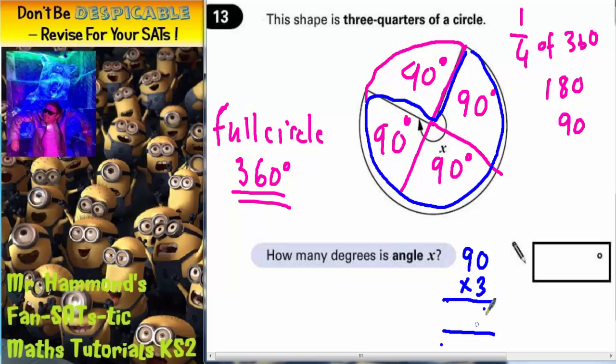3 zeros are 0 and 3 nines are 27. Put your 7 in, carry your 2, but because we've finished multiplying the columns, the 2 can just go straight in there. So your final answer is 270 degrees.